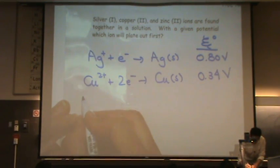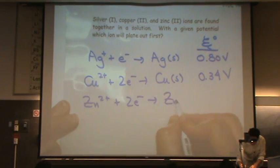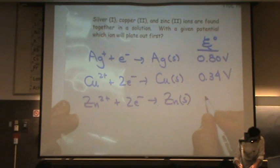And then we've got zinc two plus, plus two electrons, goes to zinc solid, and that's negative 0.76 volts.